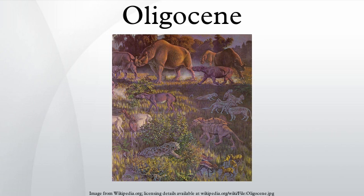During this period, the continents continued to drift toward their present positions. Antarctica became more isolated and finally developed an ice cap. Mountain building in western North America continued, and the Alps started to rise in Europe as the African Plate continued to push north into the Eurasian Plate, isolating the remnants of the Tethys Sea.